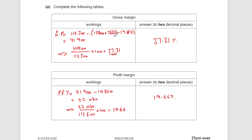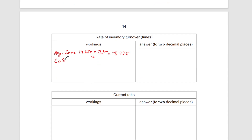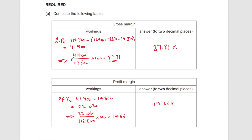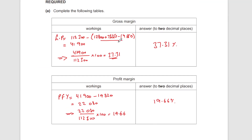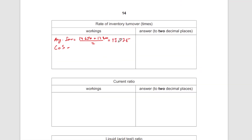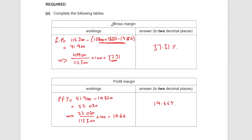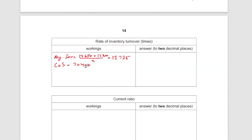To calculate inventory turnover, we need cost of sales. In the exam it's better to show your workings first. Cost of sales is 12,800 plus 72,250 minus 14,650, which equals 70,400. Then take cost of sales 70,400 divided by average inventory 13,725, giving 5.13 times — the number of times inventory was essentially replaced.